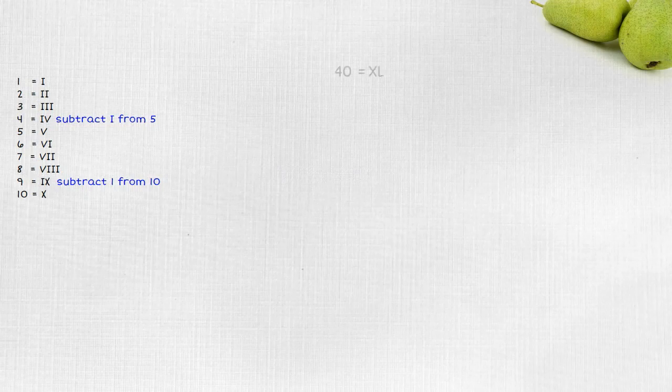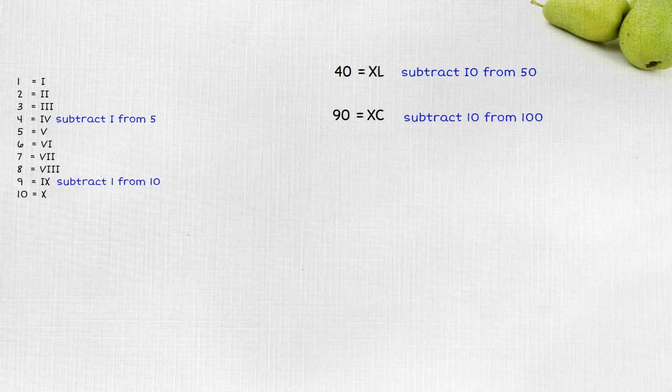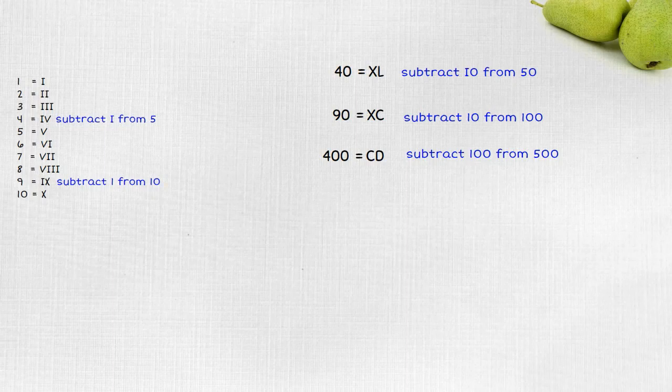To make 40 subtract 10 from 50. To make 90 subtract 10 from 100. To make 400 subtract 100 from 500. To make 900 subtract 100 from 1000.